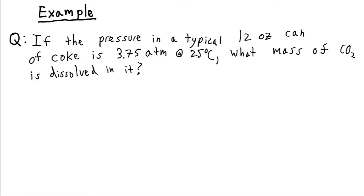Consider a typical 12-ounce can of Coke. These are pressurized by the manufacturer up to 3.75 atmospheres at room temperature, 25 degrees Celsius. In that case, what mass of carbon dioxide is dissolved in one of those 12-ounce cans?